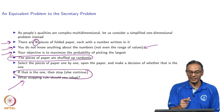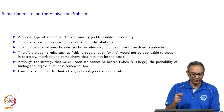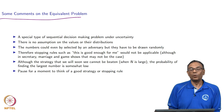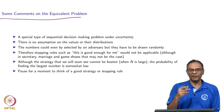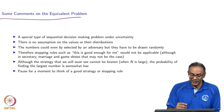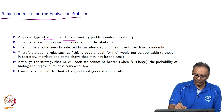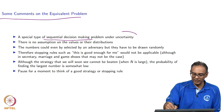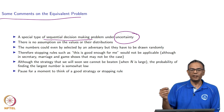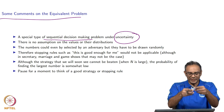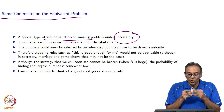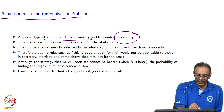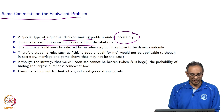By stopping, I mean you stop and say: yes, this is the largest one. This is a very special type of sequential decision-making problem, and there is uncertainty because you don't know what numbers are going to come in the future. We are not making any assumptions on the distribution of those numbers. We could even allow the numbers to be selected by an adversary who wants you to lose.